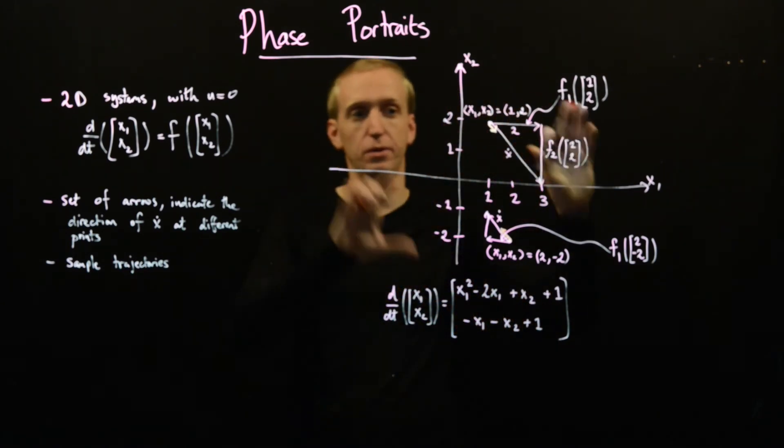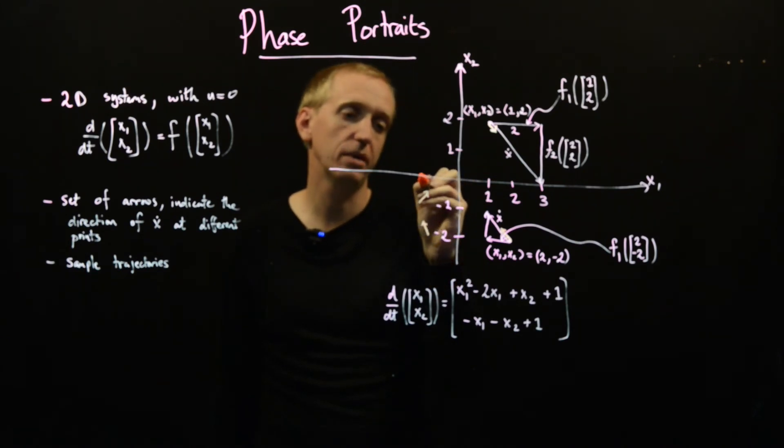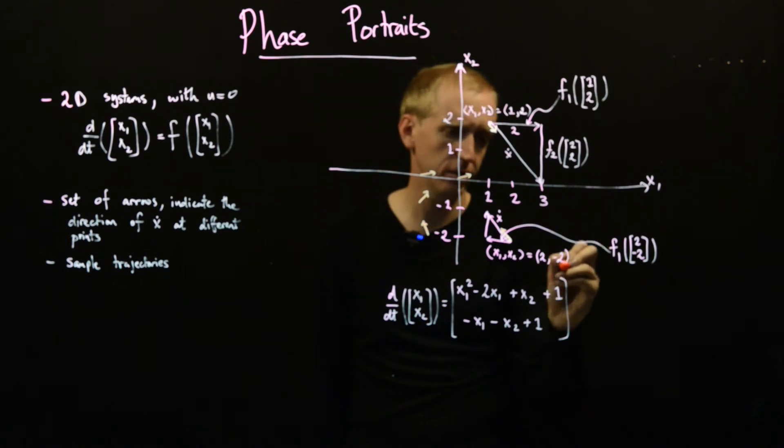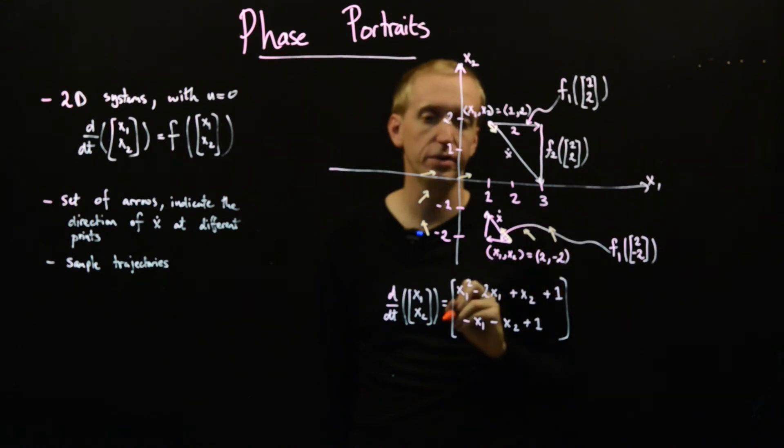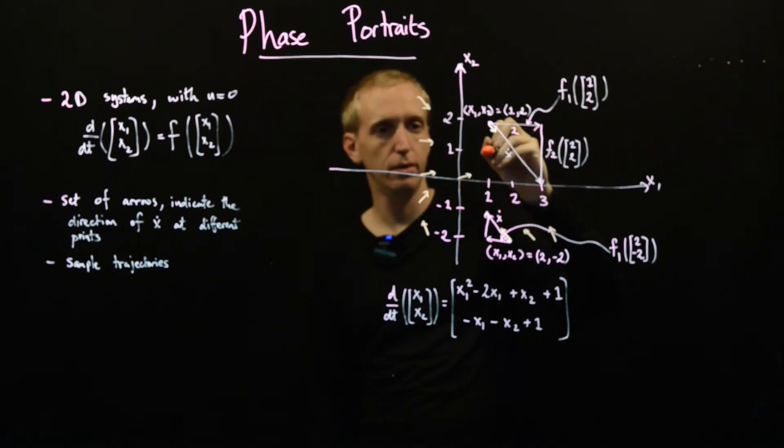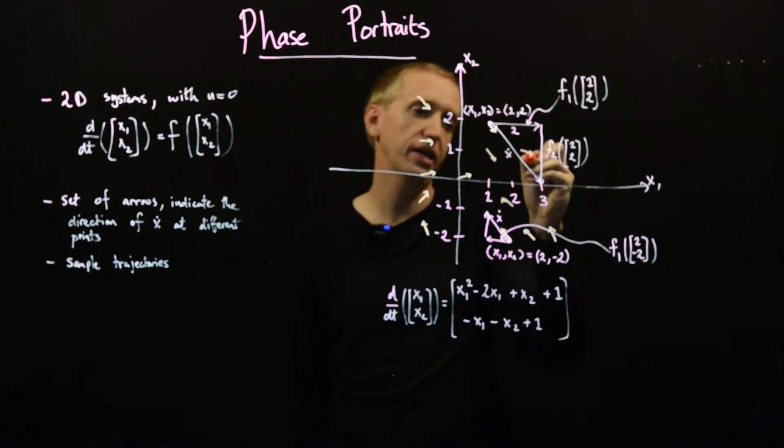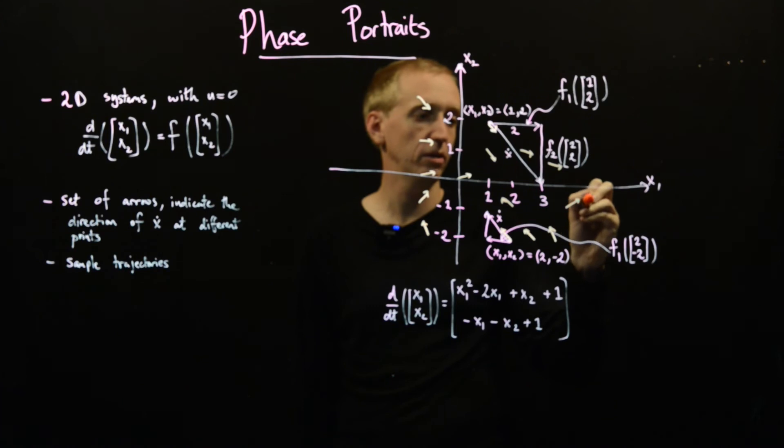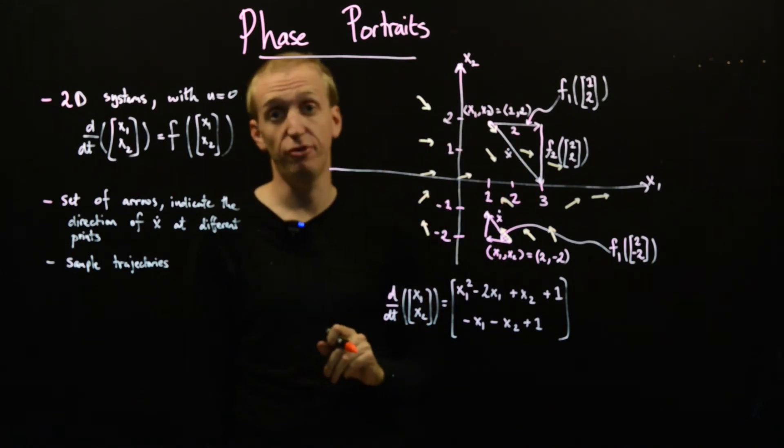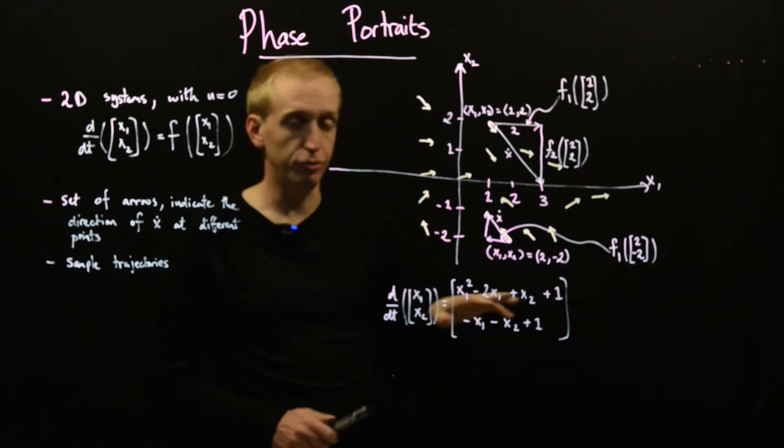And to build up our phase portrait, we just draw lots and lots of these arrows on. So if we do that, we find over here we get arrows that look something like this. And if we're down here, we find that we get more arrows that look something like this. And over here, we get arrows that look something like this. And here we get something, I'll just draw some more on. Now here we get some arrows like this. And to build up our phase portrait, we would just take lots of little points and find out the direction that x dot at all of them and draw little arrows to show the direction of changing x dot.